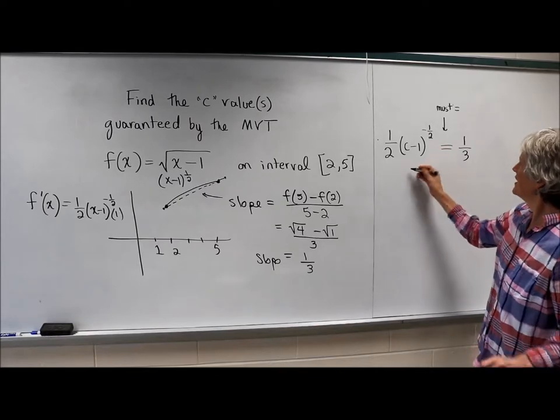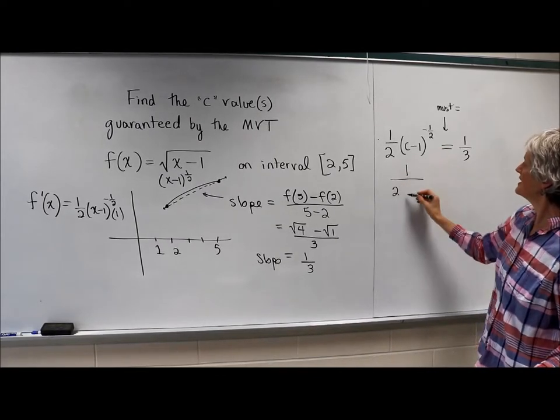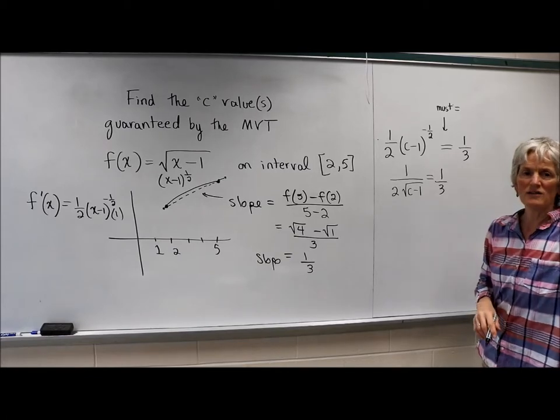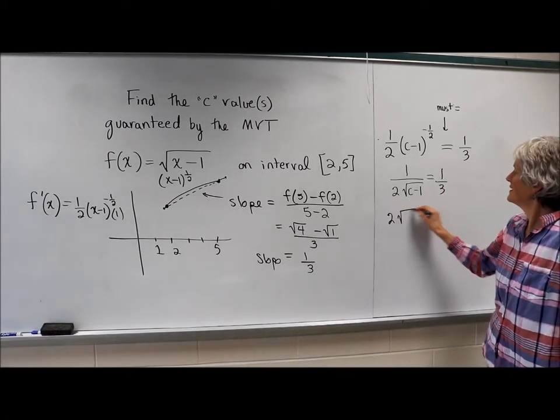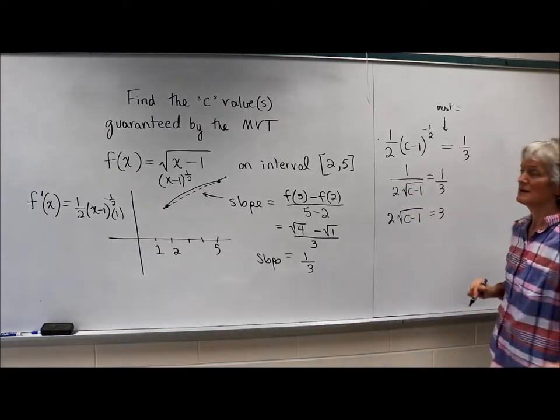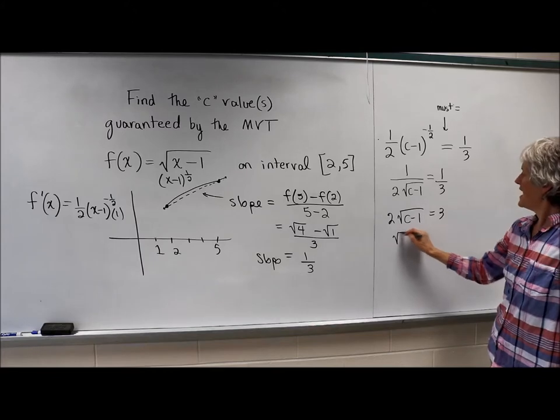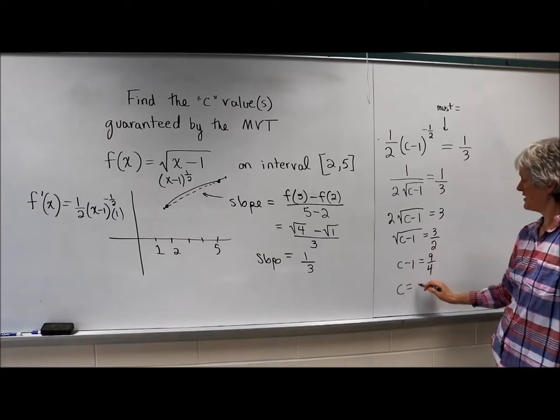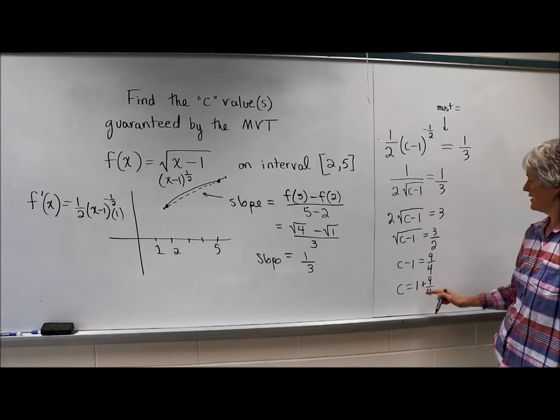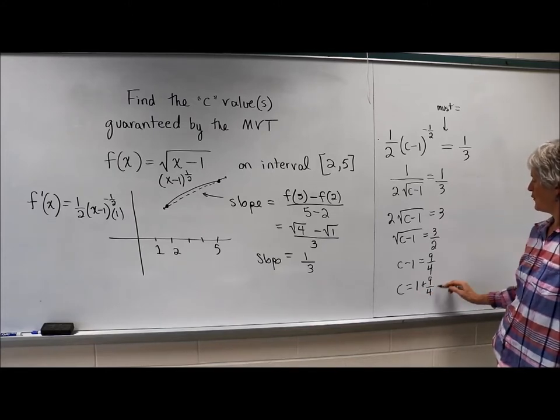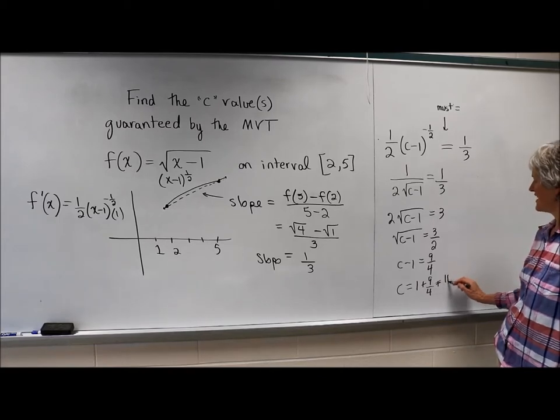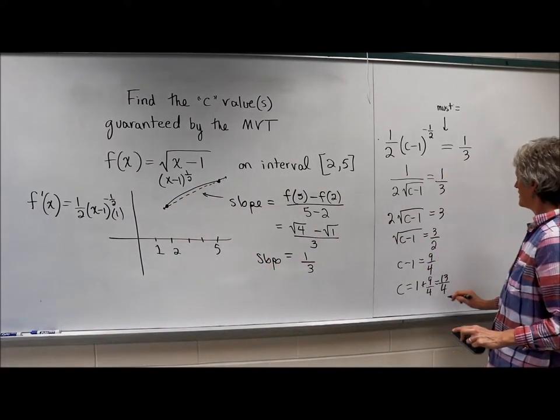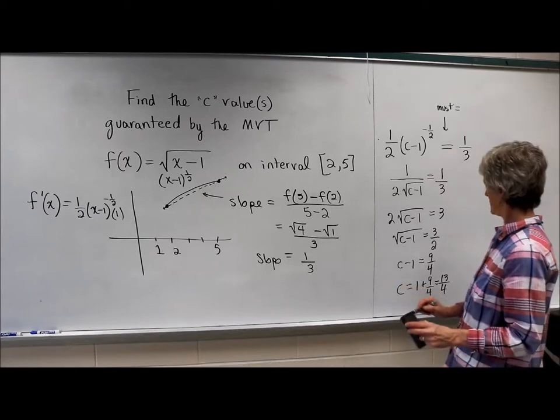So now I'm just going to solve for c. I don't like those negative exponents, I'm going to bring it on down. I can solve this any number of ways. It is a proportion, so we can cross-multiply if you like, or just do some reciprocals. I'm going to divide by 2, I'm going to square both sides, and my answer is 1 + 9/4. So 4/4 + 9/4 is 13/4, which is 3 and 1/4.